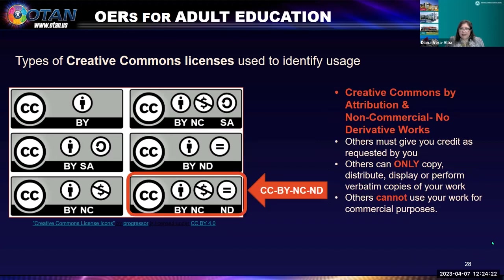The last license is the most restrictive: CC BY NCND — Creative Commons by attribution, non-commercial, and no derivative works. Others must give you credit, can only copy, distribute, display, or perform verbatim copies — they cannot make any changes, they have to use it as is — and others cannot use your work for commercial purposes. It doesn't mean it's a bad thing; it just means the author added these additional restrictions.